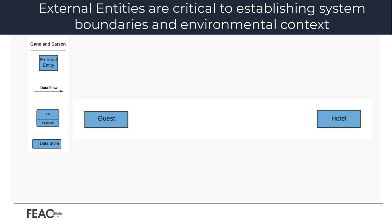First, let's start with the external entities. An external entity can represent a human, system, or subsystem — also known as actors, sources, sinks, and terminators. External entities produce and consume data that flows between the entity and the system being diagrammed. These external entities provide the data flows that are the inputs and outputs of the DFD. Since they are external to the system being analyzed, these entities are typically placed at the boundaries of the diagram.